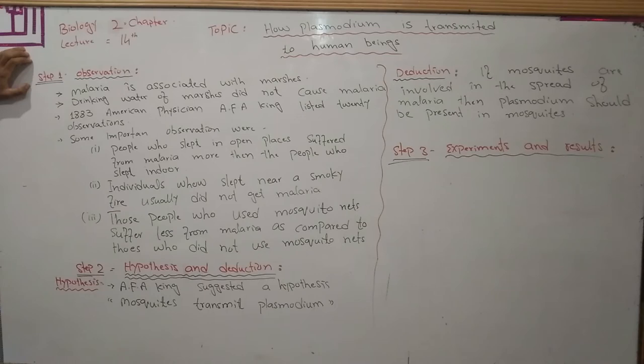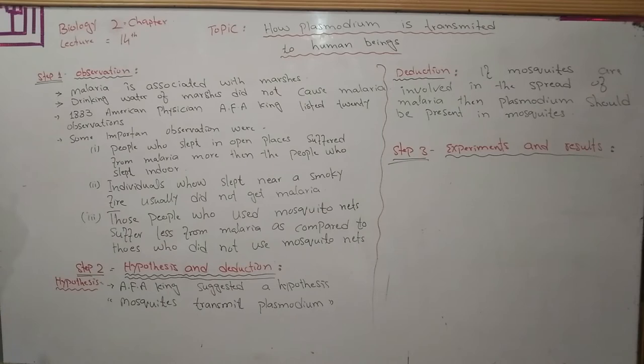Scientists, faced with the question of how plasmodium is transmitted to human beings, made different types of observations. First observation: malaria is associated with marshy areas. In marshy, wet land areas, malaria is more prevalent.